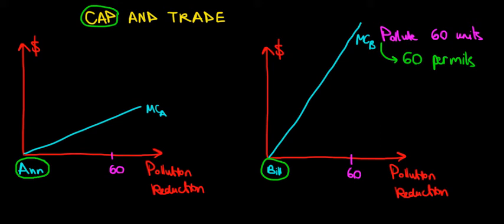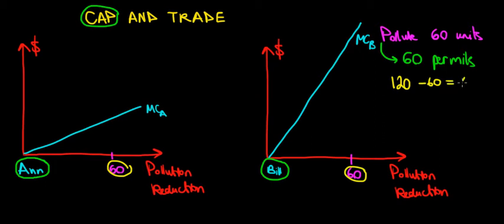How much do we have to reduce pollution? In total, N and Bill can generate up to 120 units of pollution combined, but only 60 are permitted. So we must reduce the remaining 60 units of pollution.